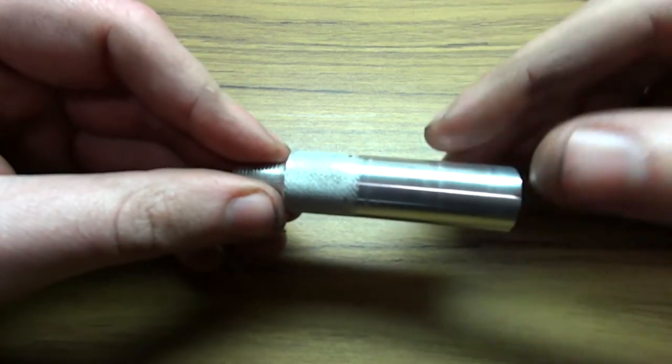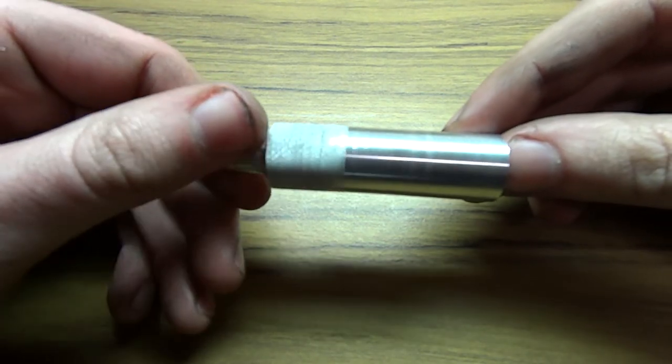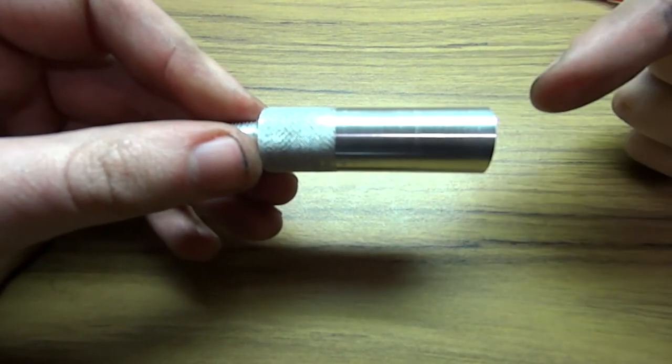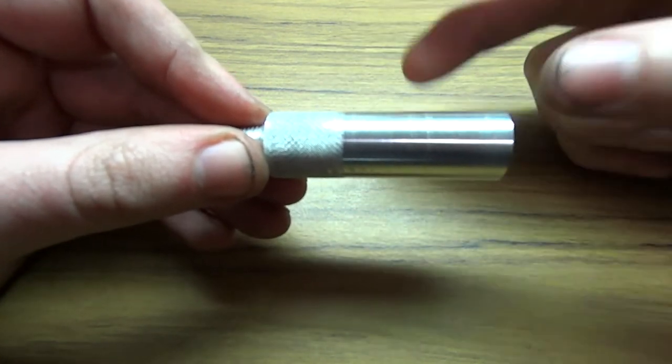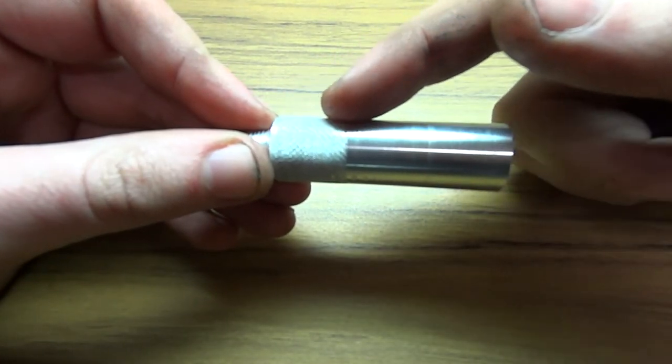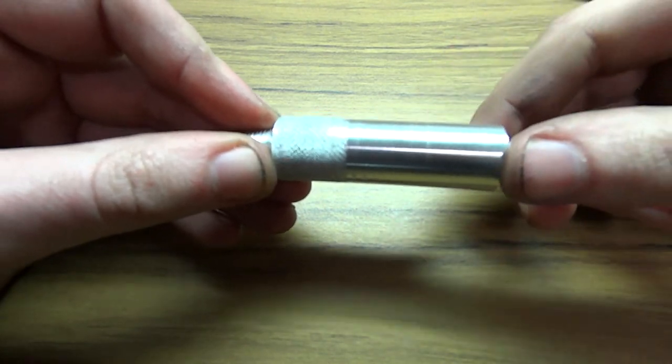So you can vary your shot by either pushing this all the way in and then it's a weaker shot, and then the further you let it come out, the stronger the shot gets.